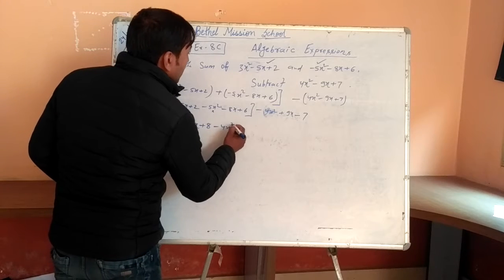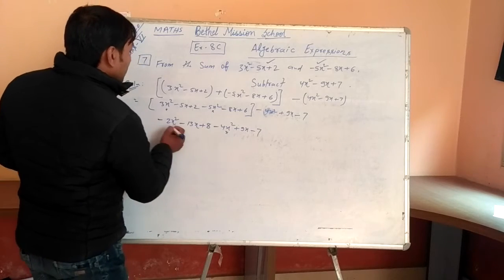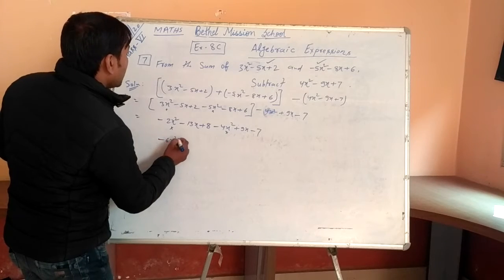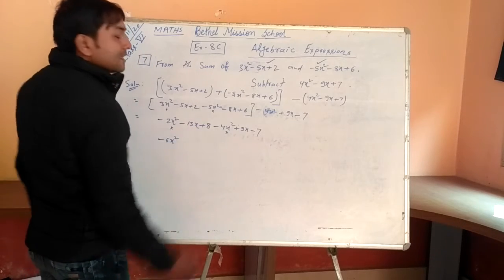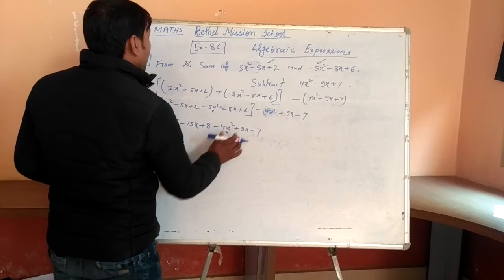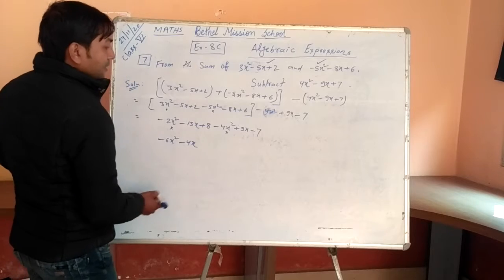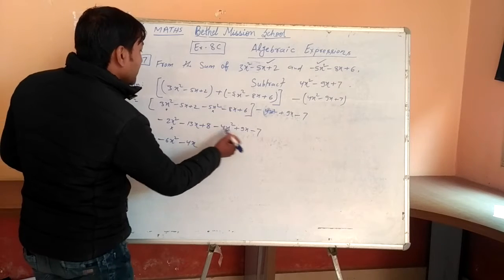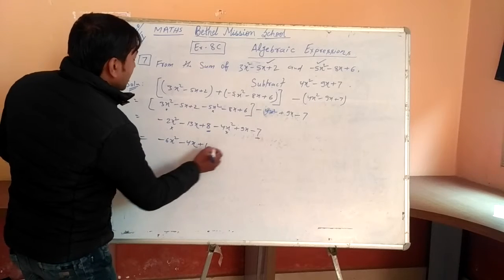Now write minus 4X squared plus 9X minus 7. Now, which are like terms? X squared here and X squared here. Minus 2 and minus 4, that is minus 6X squared. And X, X — that is minus 13X and plus 9X. Minus plus, we have to subtract, that is 13 minus 9 equals 4, and the negative symbol will be minus 4X because minus 13 is bigger. And 8 minus 7 equals 1. This is the answer.